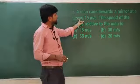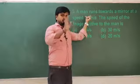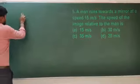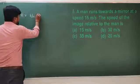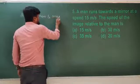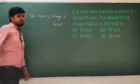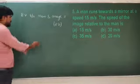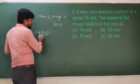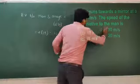The man is moving with a velocity of 15 meters per second; at the same time the image also moves with a speed of 15 meters per second. The relative velocity between man and image is 2U, where U equals 15 meters per second. Therefore, the relative velocity is 2 × 15 = 30 meters per second, and the correct option is Option B.